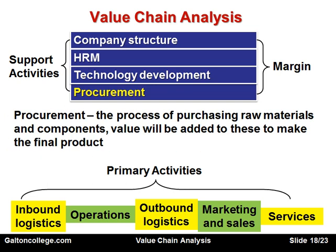Finally, we have procurement — the process of purchasing raw materials and components. Value will be added to these to make the final product. The business may have specialist buying staff whose job it is to negotiate discounts, delivery times, terms of delivery, and warehousing, making sure that goods arrive on time and are properly stored.